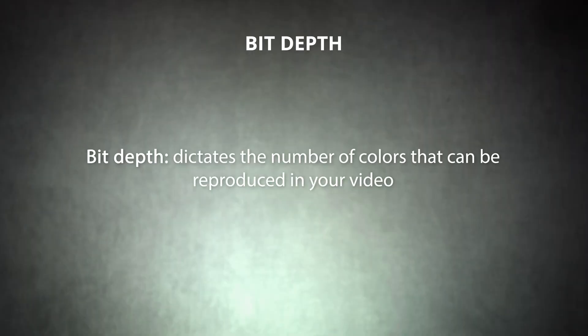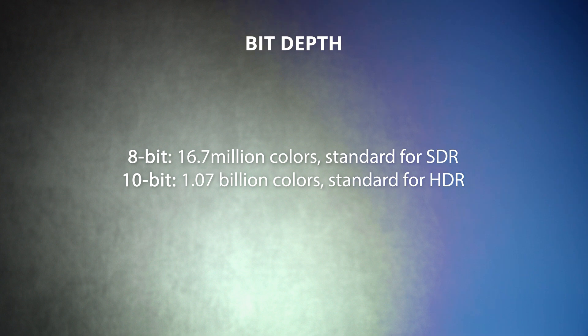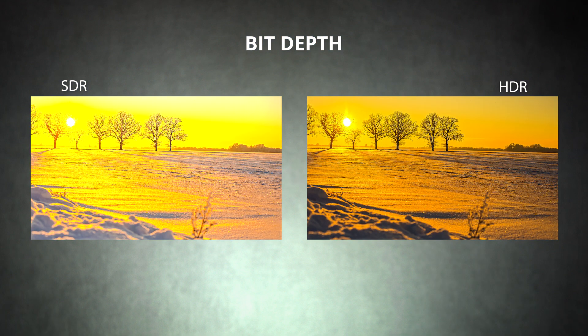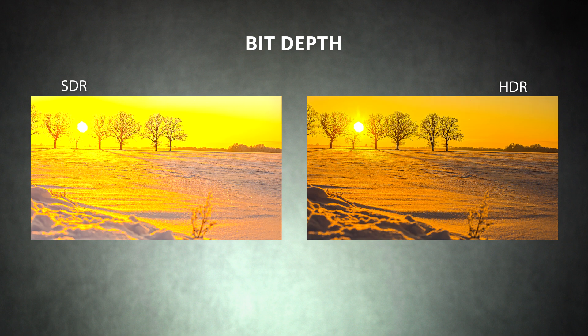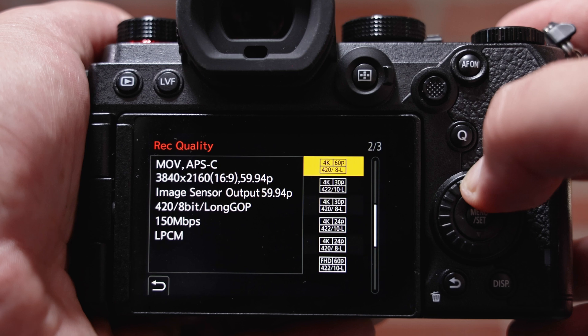Another setting you might want to change when exporting is bit depth. This dictates the number of colors that can be reproduced in your video. The most common bit depths are 8-bit, which can reproduce 16.7 million colors, and 10-bit, which can reproduce over a billion distinct colors. 8-bit is the standard bit depth for standard dynamic range (SDR). 10-bit is the standard for high dynamic range (HDR) footage. HDR extends the range of light and dark that can be captured in a single frame, so more detail can be seen in both the highlights and shadows. While it's always best to capture footage in the highest bit depth available, your choice for exporting depends on the destination. Check with your video destination to see what is supported. Note that exporting 8-bit video in a 10-bit format won't add any new color information — it's usually best to export at the same bit depth you used for editing and color correction.